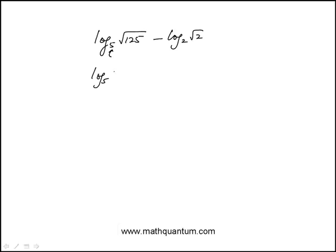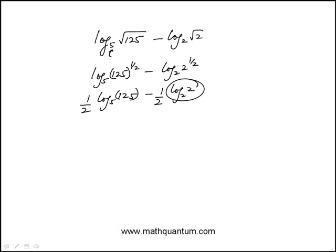The square root can be written as an exponent of one half, so we have log base 5 of 125 to the one half, and log base 2 of 2 to the one half. This is equivalent to one half times log base 5 of 125 minus one half times log base 2 of 2, which equals 1.